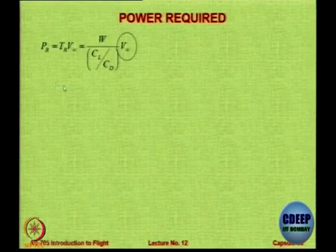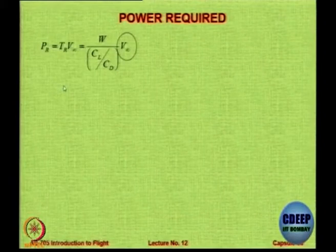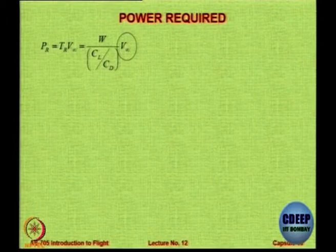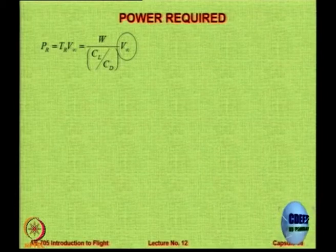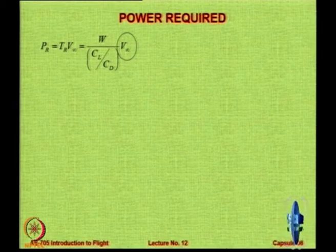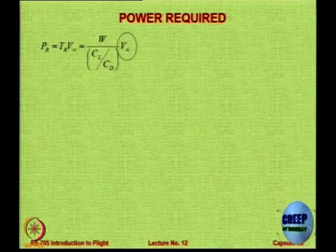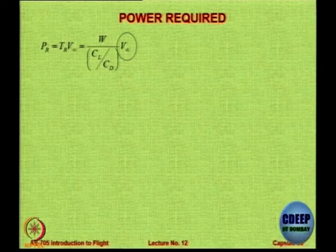Power required is basically the thrust required into velocity. The thrust required is correctly shown here as W over CL/CD. So, thrust required is W divided by (CL/CD) and V∞ is the velocity.